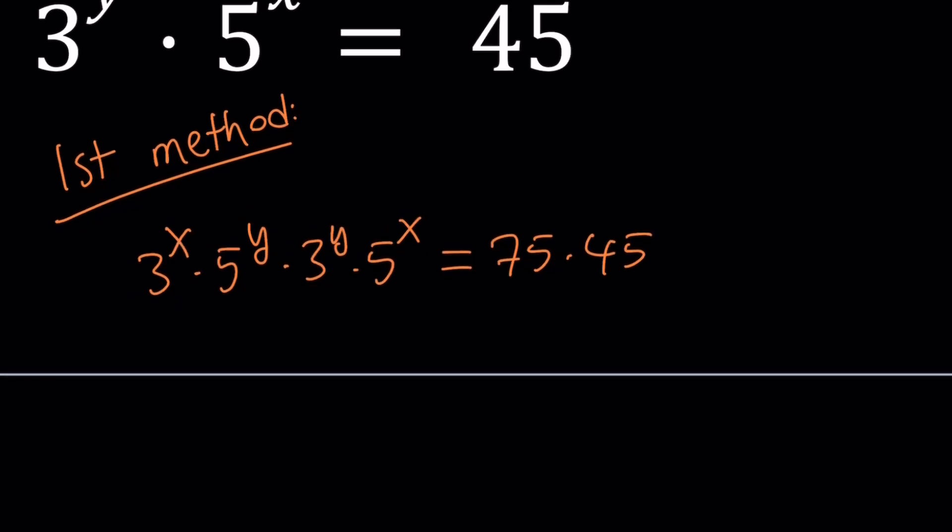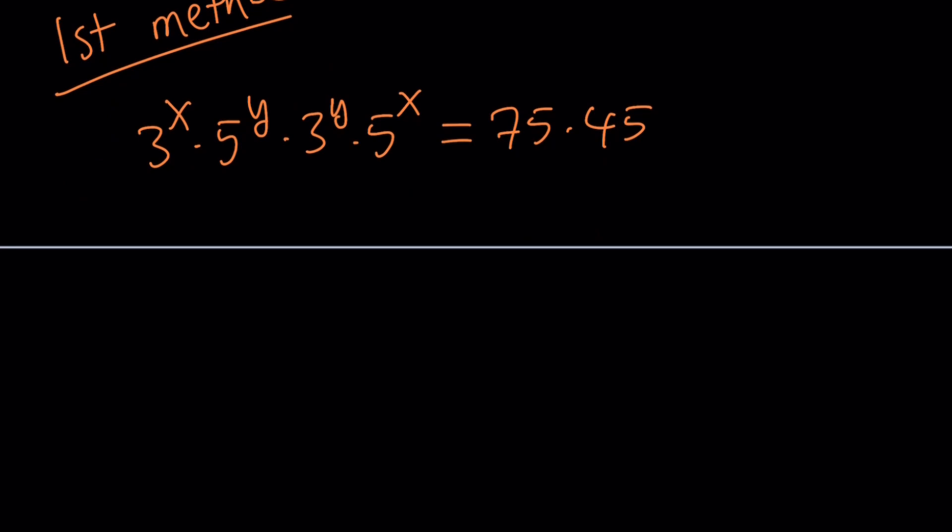From here we can combine the powers of 3, and when you multiply two powers, you add the exponents. So this becomes 3 to the power x plus y, and then the other two make 5 to the power x plus y.